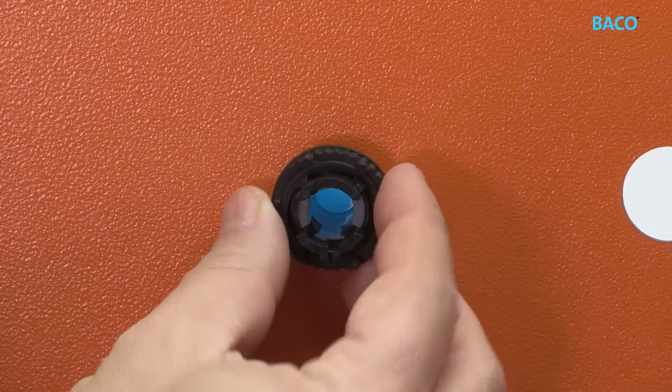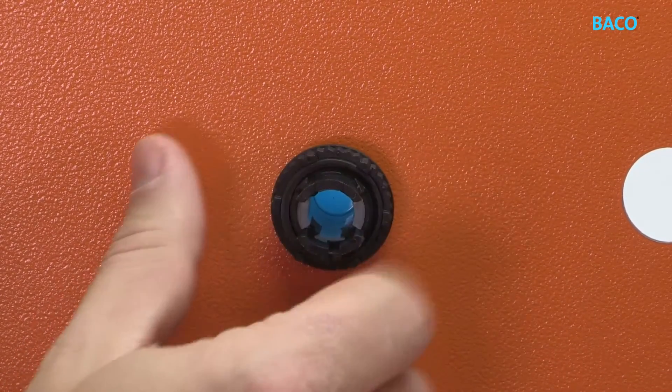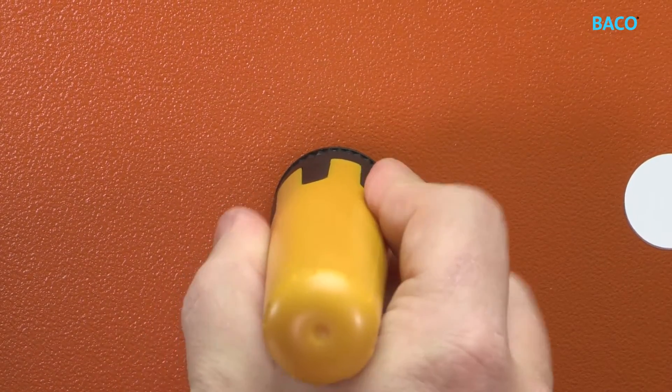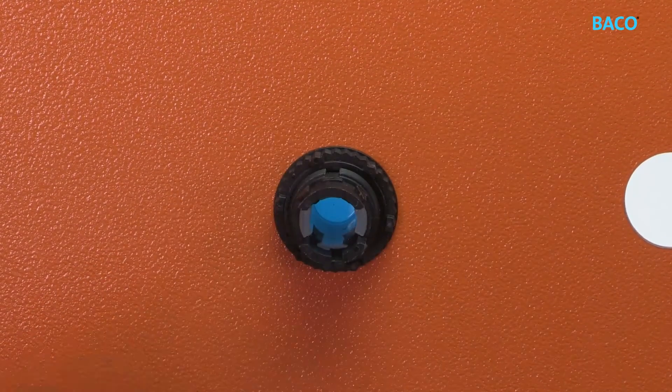Now add the mounting ring using the appropriate tool, the BACO tightening wrench LWA0234. The recommended torque is 3Nm.